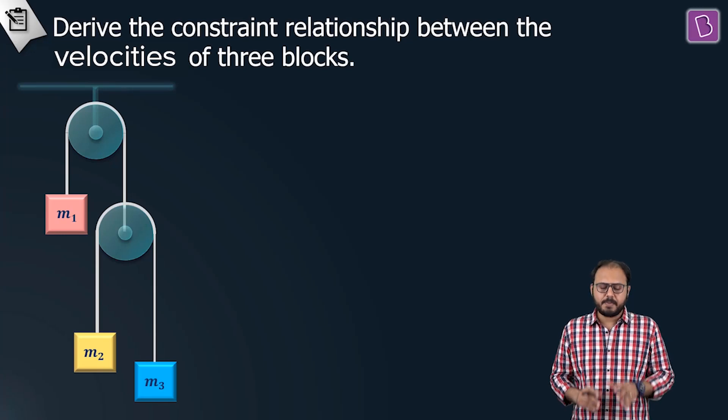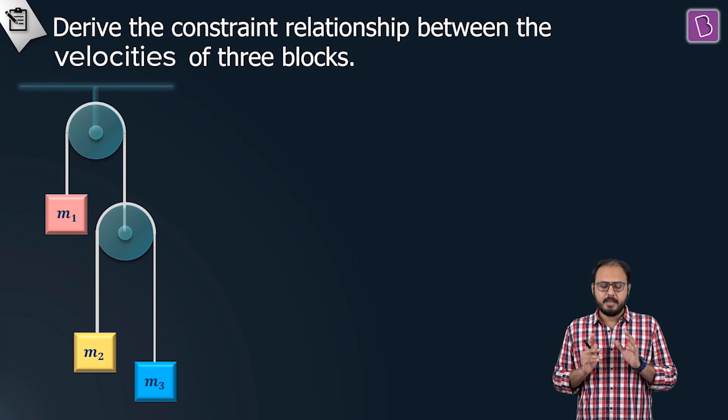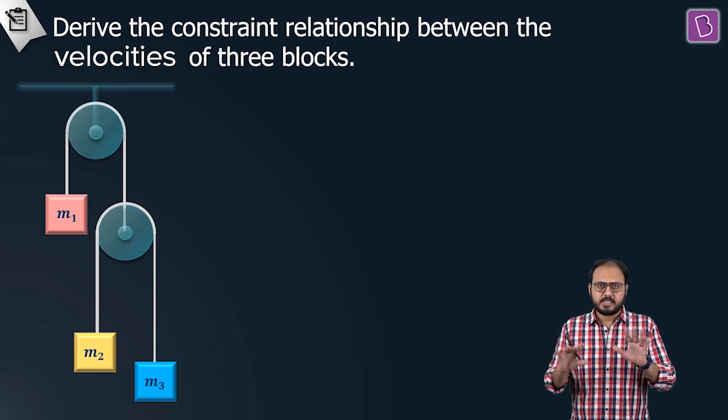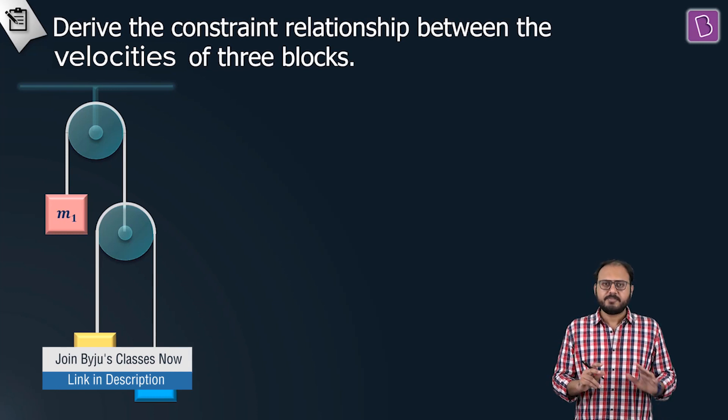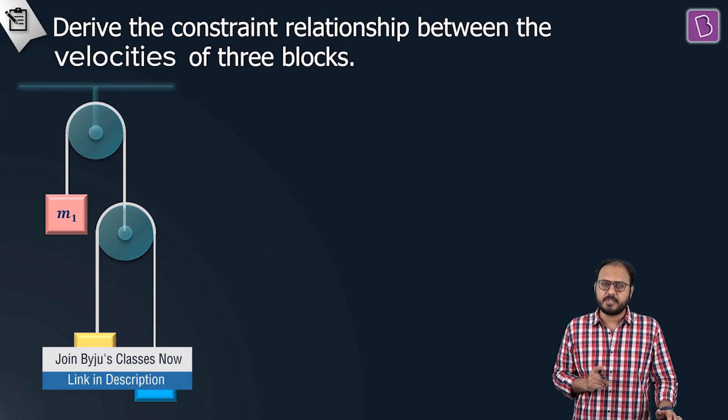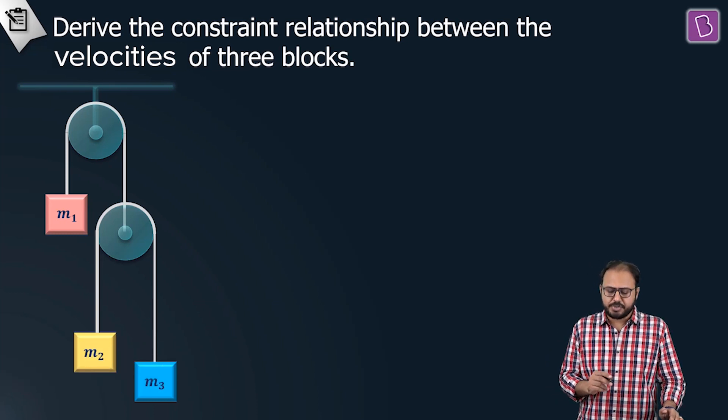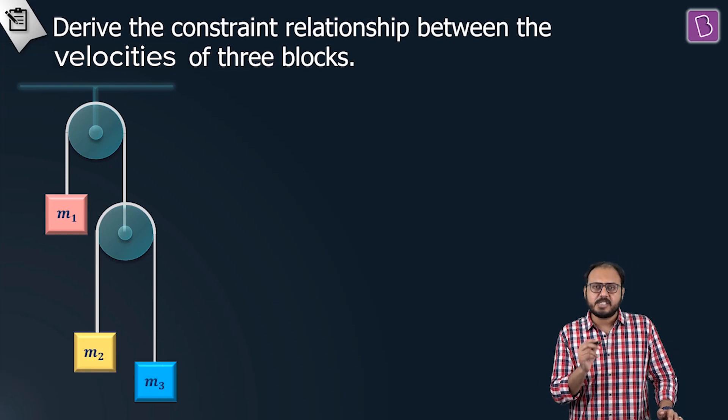Derive the constraint relationship between the velocities of three blocks. As I said, the system contains two pulleys and three blocks. First, understand the physicality of the system, and then we will find the constraint relationship between the velocities of three blocks.